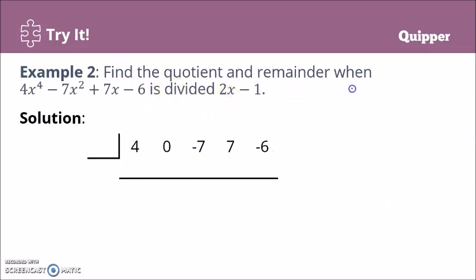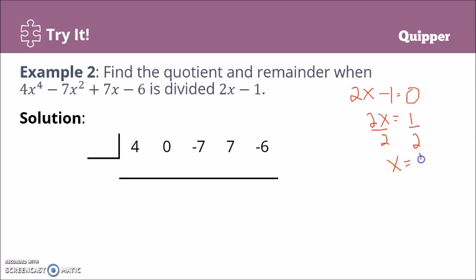We solve for x from the divisor: 2x minus 1 equals 0, so 2x equals 1, and dividing both sides by 2 gives x equals 1/2. We write 1/2 in the designated spot. Bring down 4. Multiply 4 times 1/2 — that's 4/2, which equals 2.